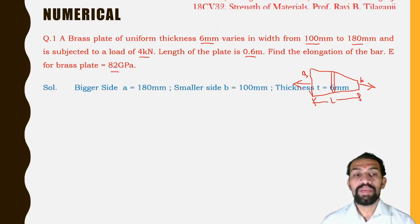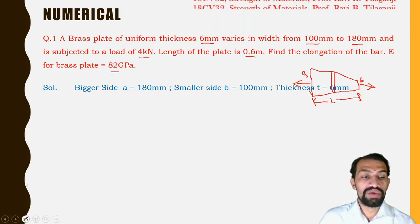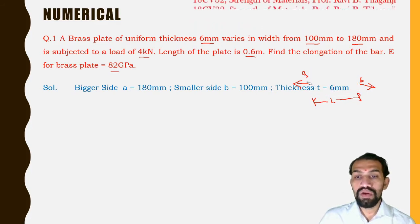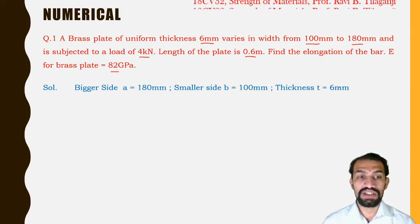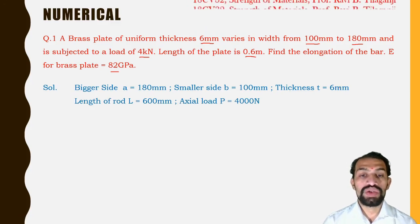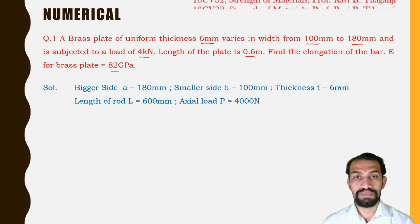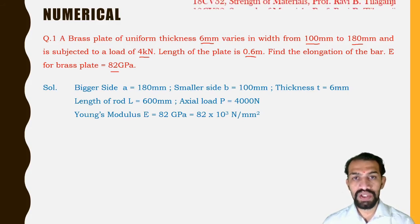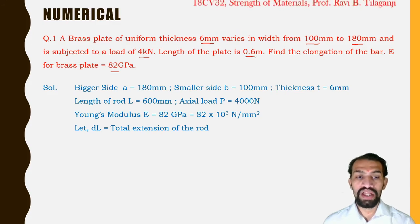Given: larger width A = 180 mm, smaller width B = 100 mm, thickness t = 6 mm, length L = 600 mm, actual load P = 4000 N, and Young's modulus E = 82 GPa = 82 × 10³ N/mm². The formula for total extension delta L is P·L / (E·t·(A−B)) · ln(A/B).